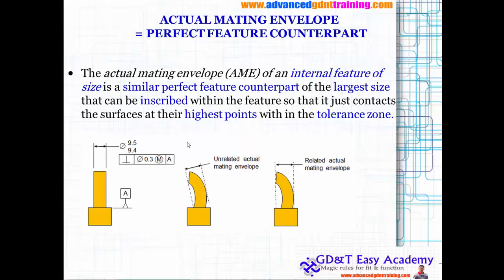The counterpart represents the largest size that can be inscribed within that feature so that it just contacts the surfaces at their highest points. This is the related condition where perpendicularity is maintained, and this is the unrelated condition where it can still go inside. The practical condition where you can have perpendicularity maintained with respect to this particular feature — and all this tolerance — will be interpreted in detail.